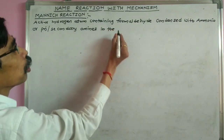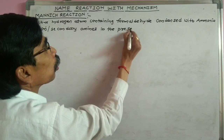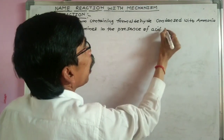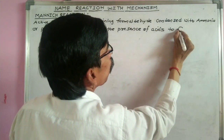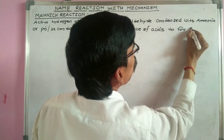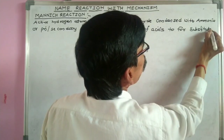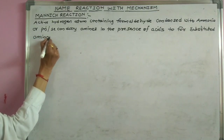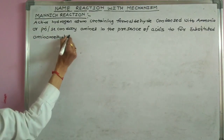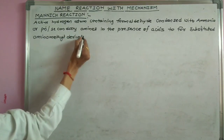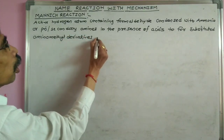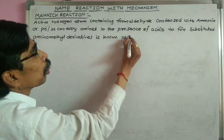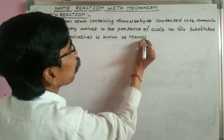In the presence of acid, to come substituted aminomethyl derivatives is known as Mannich base.